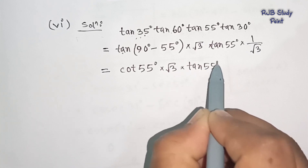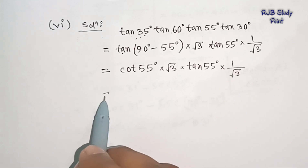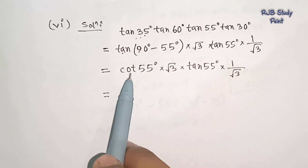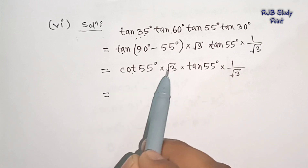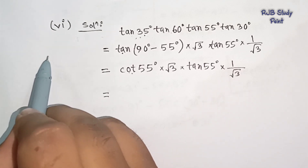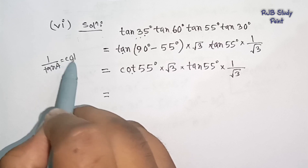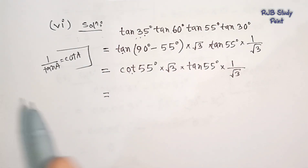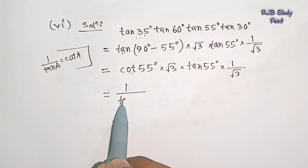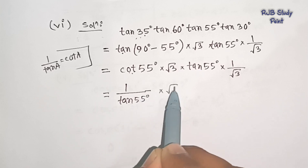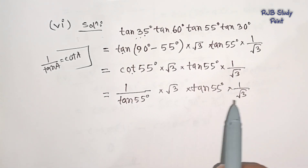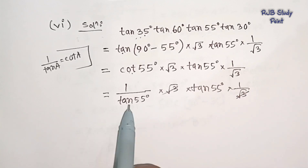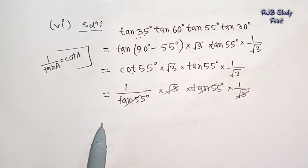I will write tan 55 degrees. Tan 50 degree is equal to 1 by tan A. So tan 55 degree into root 3, into 1 divided by root 3. The root 3 and root 3 cancel, and tan 55 degrees cancel. So 1 into 1 is 1. The answer is 1.